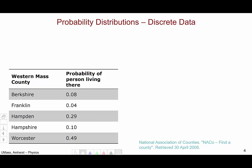Now let's move on to thinking about probability distributions beginning with discrete data. Here I have a table of the probability of a given person living in one of the five western Massachusetts counties: Berkshire, Franklin, Hampden, Hampshire, and Worcester.